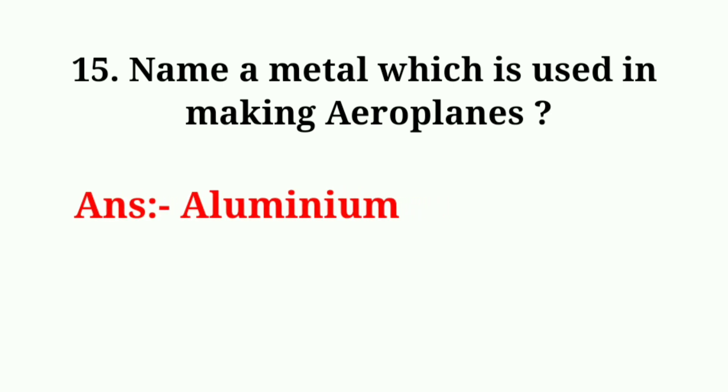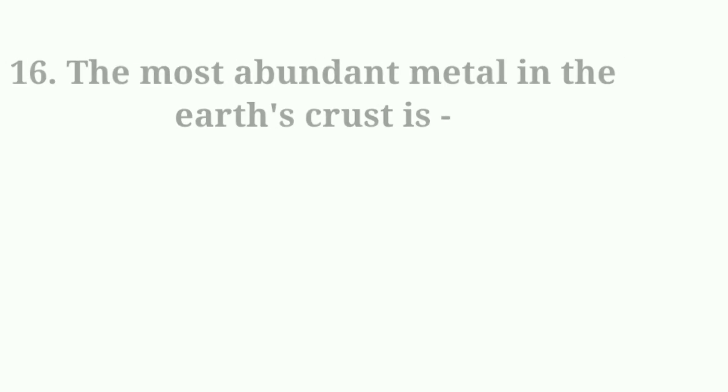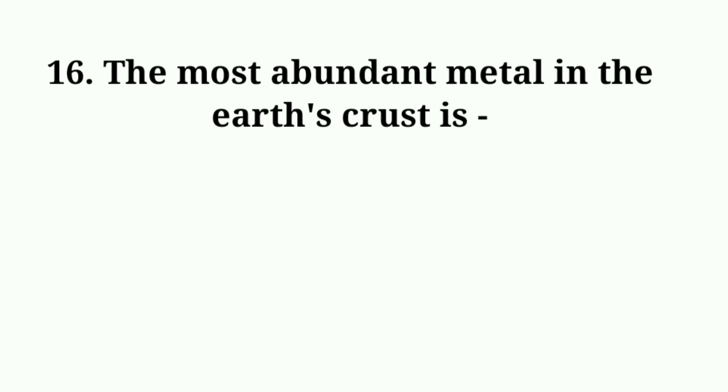The first alloy made by humans was bronze. The most abundant metal in the Earth's crust is? Answer: Aluminium.